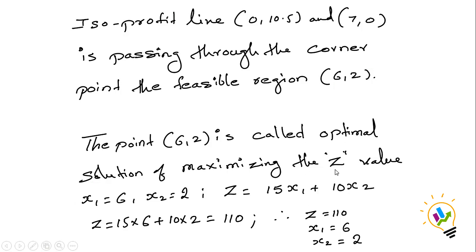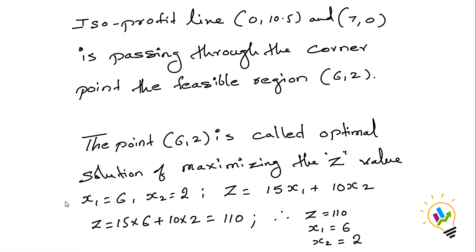Substituting X1 equal to 6 and X2 equal to 2 into the objective function Z equal to 15X1 plus 10X2 gives Z equal to 110. So the optimal solution is Z equal to 110 at X1 equal to 6 and X2 equal to 2. This is how we solve the linear programming graphical method using the ISO profit line approach.